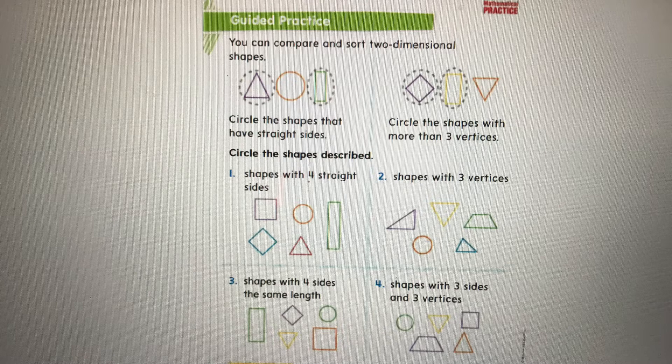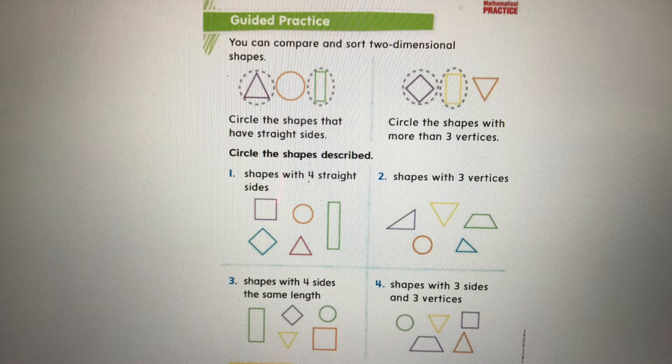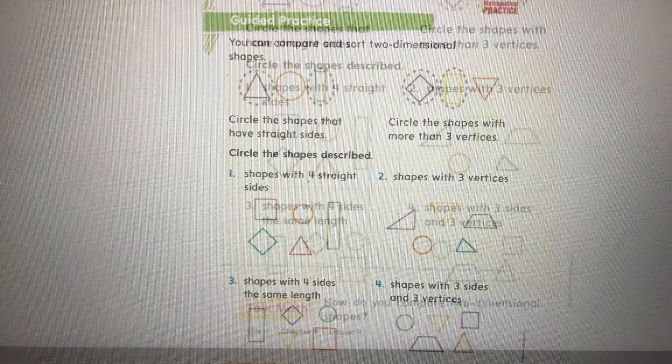Earlier in the video, we talked about how you can compare and sort two-dimensional shapes. So you can see the triangle, circle, and rectangle, and they have those dotted lines around some of them showing that they circle that. The direction said, circle the shapes that have straight sides. A triangle and a rectangle both have straight sides, so that's why those are circled. On the right side, you see that the diamond shape, which is also a square, and the rectangle are circled, because the direction said, circle the shapes with more than three vertices. More than three would be four or more.